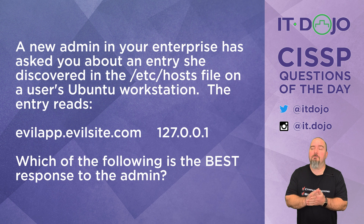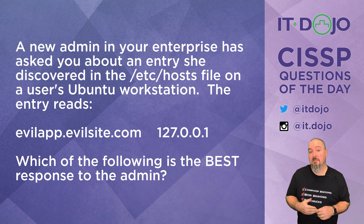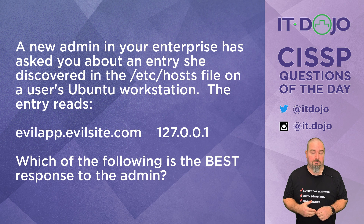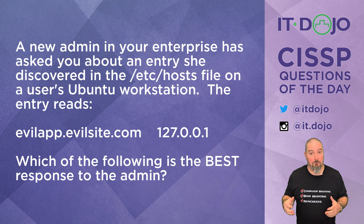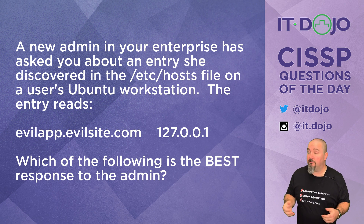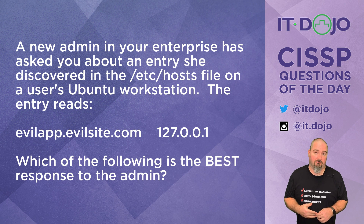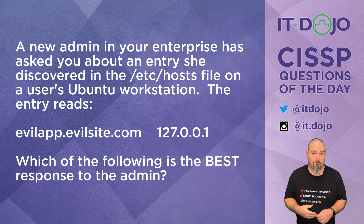A new admin in your enterprise has come to you with a question about an entry that she discovered in the /etc/hosts file on a user's Ubuntu workstation. The entry reads evilapp.evilsite.com, followed by the IP address 127.0.0.1. Which of the answer choices that I list should you tell the admin?